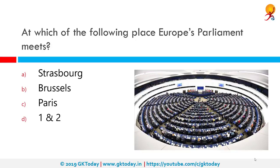At which place does Europe's Parliament meet? Europe's Parliament meets at both Strasbourg and Brussels. The European Parliament is the only parliamentary institution of the European Union directly elected by European citizens aged 18 or older. Together with the European Commission and the Council of the EU, it exercises the legislative function of the European Union.